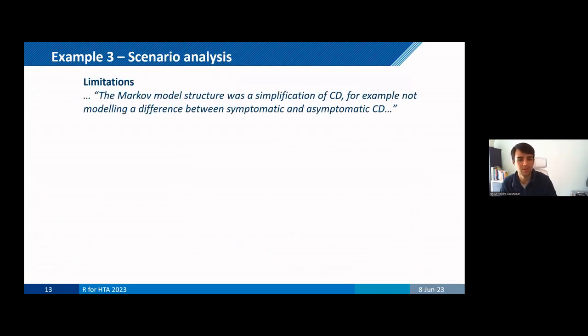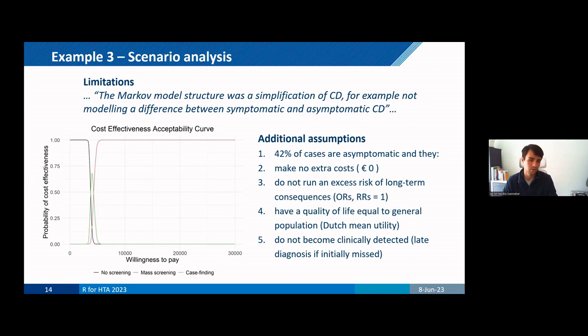And finally, to the last example, this is about the scenario analysis where we try to account for the presence of asymptomatic CD. So a limitation from both models is that they don't distinguish between symptomatic and asymptomatic cases because there's not enough information about asymptomatic CD. And not accounting for this actually favors any form of testing because asymptomatic cases, you can imagine, probably make less cost and have a higher quality of life than symptomatic cases. So in addition to this, the fact that our results showed that testing for CD was highly cost effective, indicated to us that this was an important limitation to at least explore. So we made several additional and on purpose rather extreme assumptions about an asymptomatic cohort to test if both strategies would still be cost effective.